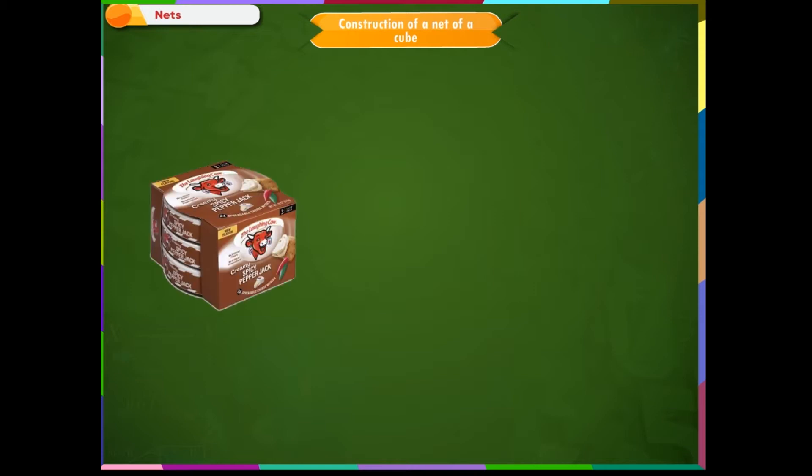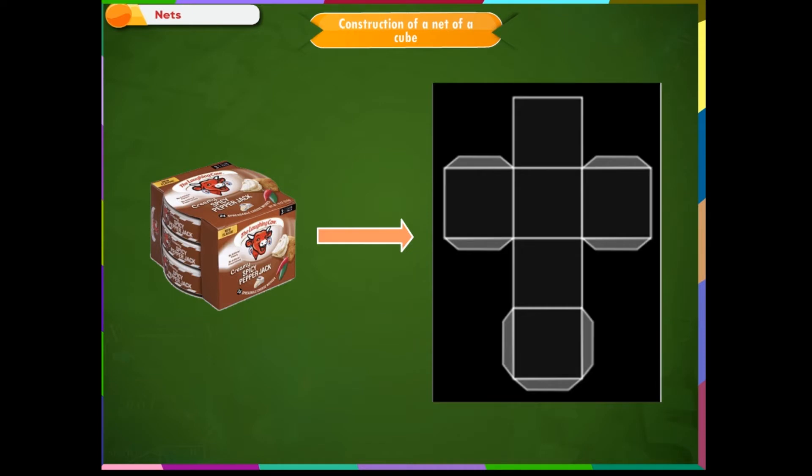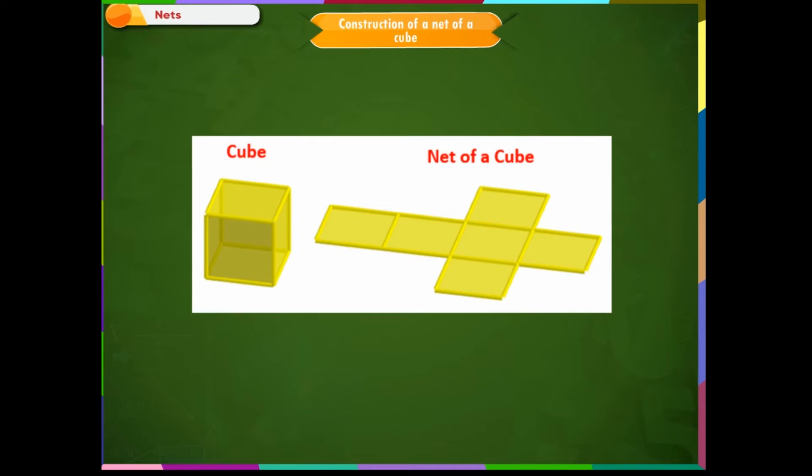Construction of a net of a cube. You can do this activity first before proceeding to the next part of the lesson. Take a cheese cube box and cut it out along the edges to make the net for a cube. A cube is a three-dimensional figure with six equal square faces.